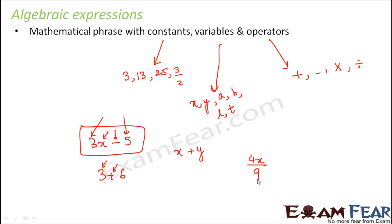4x by 9, this is an example of algebraic expression. It has both variables, constants as well as operators. So which operator is present here? It is the division operator.